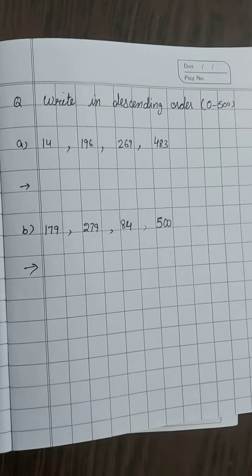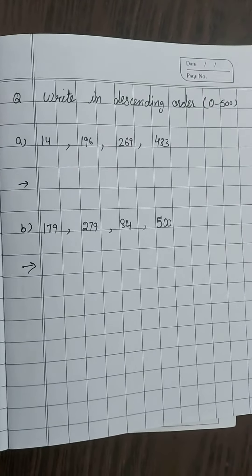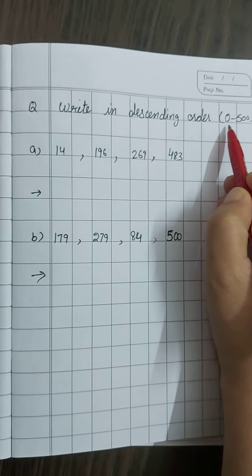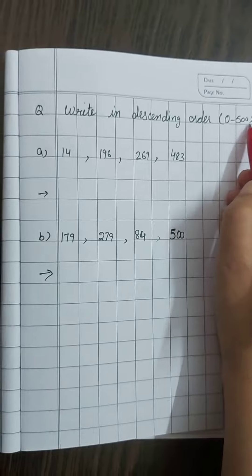Good morning students. Today we will do one new topic that is descending order. We will do descending order from 0 to 500.